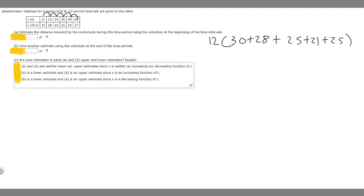So if you do 30 plus 28 plus 25 plus 21 plus 25, then you multiply this by 12 because this is the gap at the interval. You're going to get 1,548. And so that's going to be the answer to the first part here.